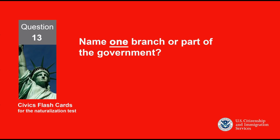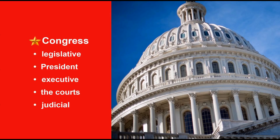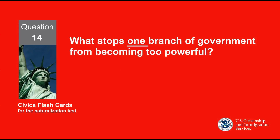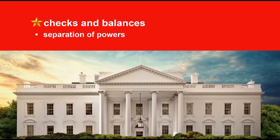Name one branch or part of the government. Congress. What stops one branch of government from becoming too powerful? Checks and balances.